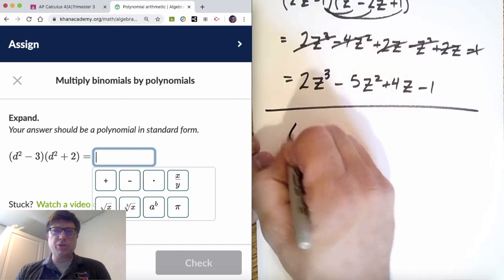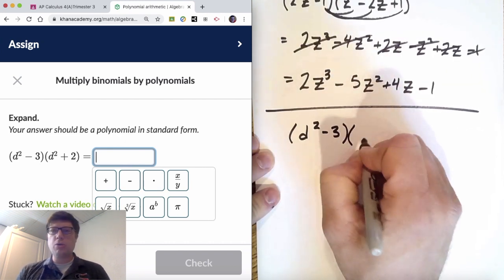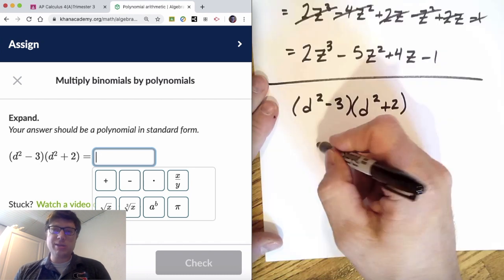I might show a different method here. I might show an area model or I might show foil. It depends on the tool that I want to use that makes sense.